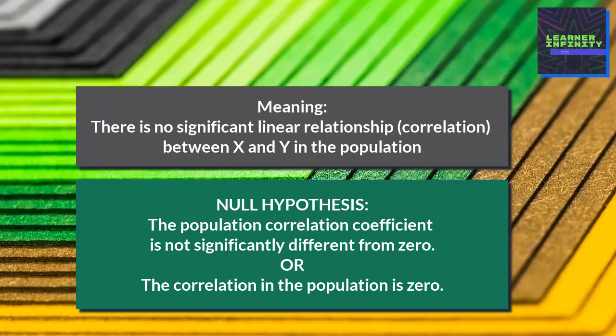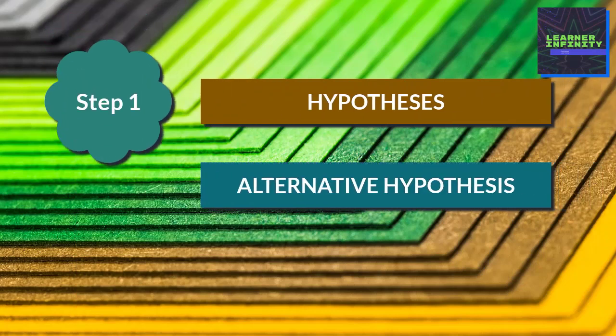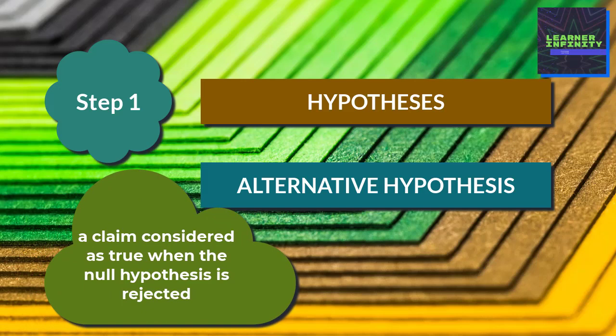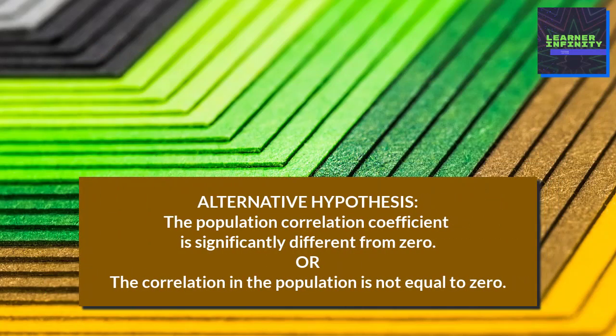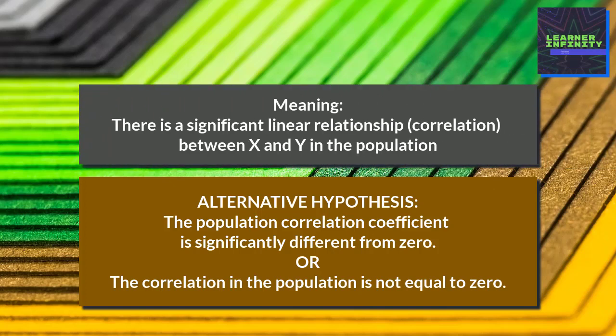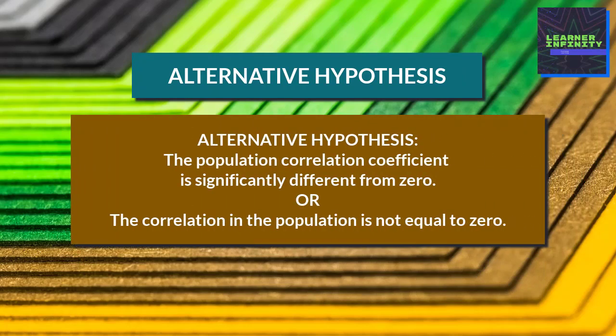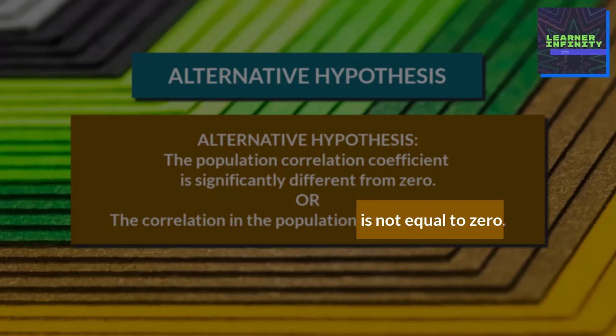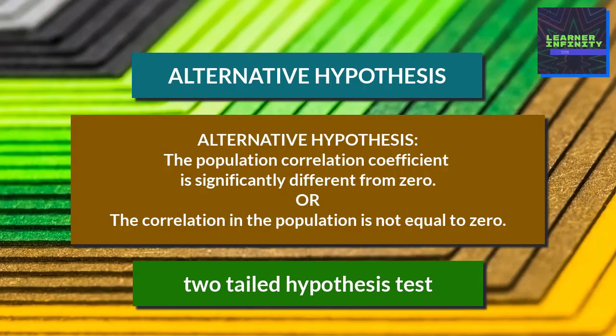Meaning there is no significant linear relationship or correlation between x and y in the population. The alternative hypothesis is simply the opposite of the null hypothesis — it is a claim that is considered true when the null hypothesis is rejected or not accepted. Our alternative hypothesis is: the population correlation coefficient is significantly different from zero, or the correlation in the population is not equal to zero, meaning there is a significant linear relationship between x and y in the population. In our case, the alternative hypothesis has two sides — not equal to zero means either smaller than zero or larger than zero. Therefore, the alternative hypothesis is a two-tailed hypothesis test.